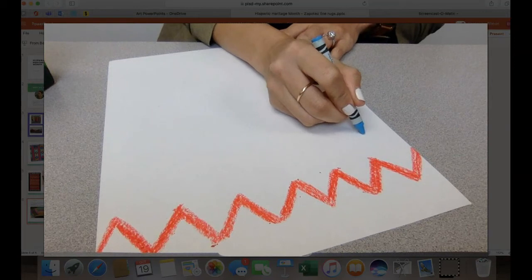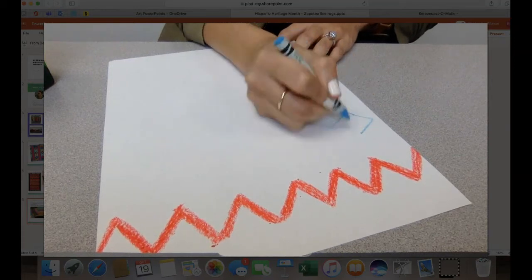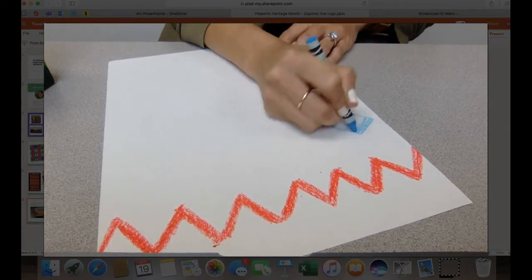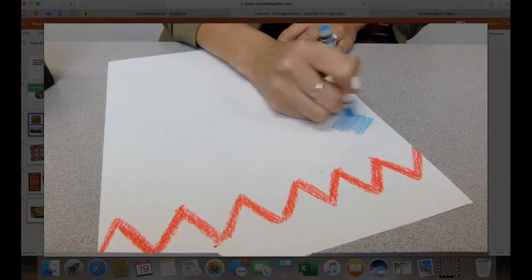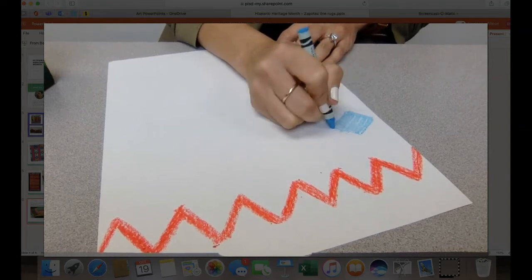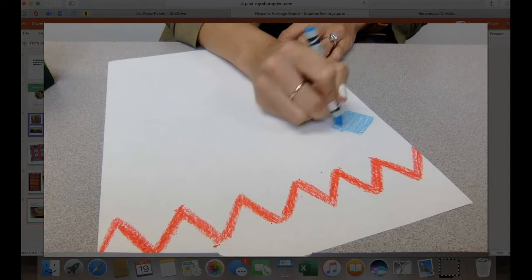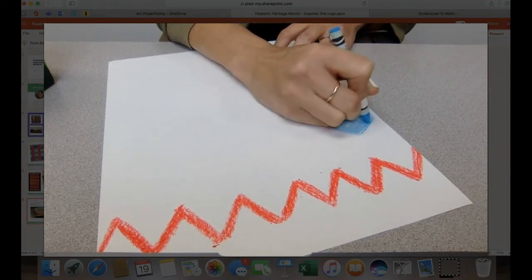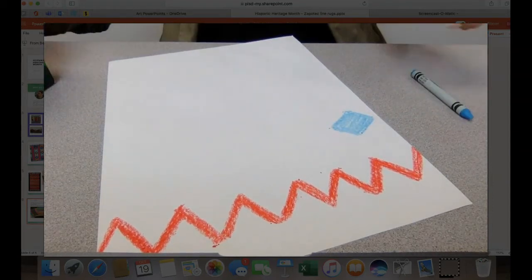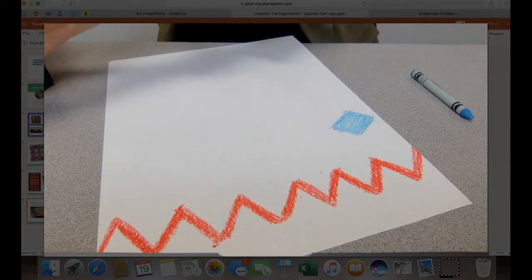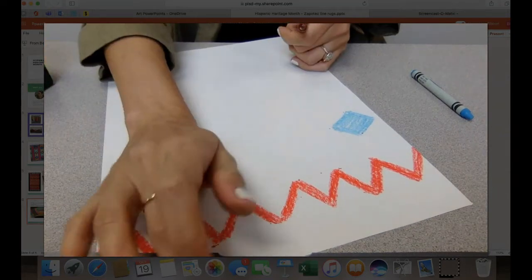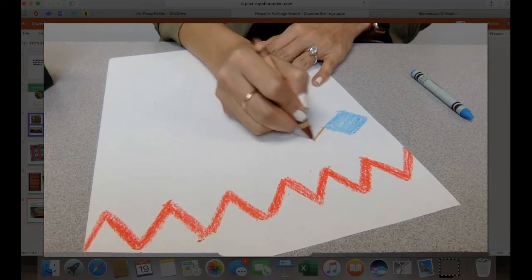So I have my zigzag line and then I'm going to choose another color. And here what I want to do is you can have a line of shapes and they like to use a lot of diamonds. So I'm putting on, I'm putting a diamond here. And your diamonds don't have to be one color. You can have alternating diamonds or a pattern.